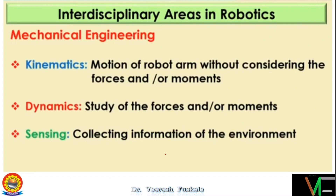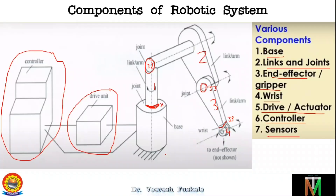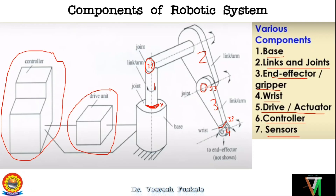Getting back to the previous slide — you can see this up to the wrist in your hand also. Up to the wrist, your arm is responsible for the position. But the orientation is majorly decided by your wrist. So orientation work can be done by your wrist; up to the wrist, it will be the position.